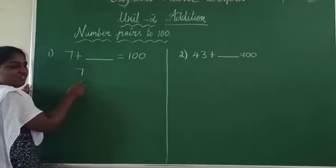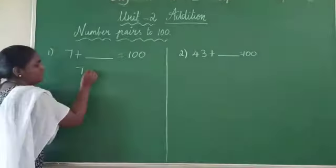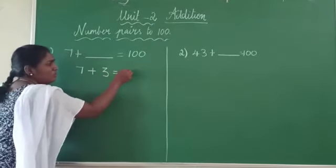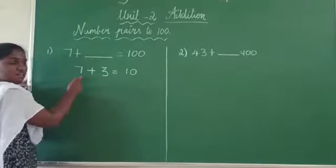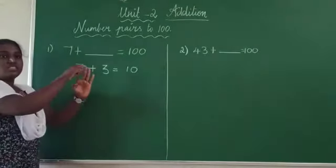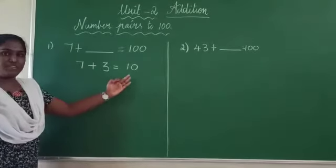Now listen, you have 7. So whose friend of 7? 7's friend is 3. So add plus 3 which gives you 10. 7 plus 3, 10. That is 7 in your mind, 3 in your finger. 7, after 8, 9, 10. So you have 10.